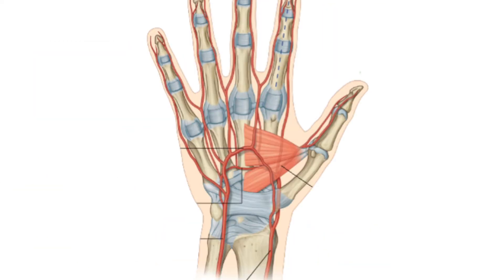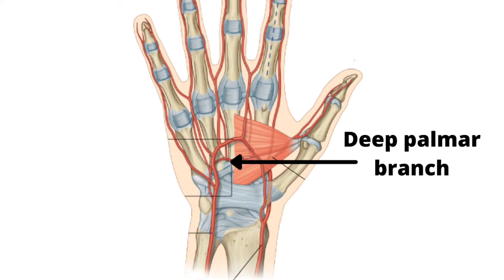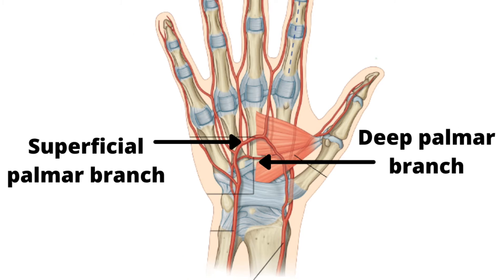In the palm, the artery divides into the deep palmar branch, which takes part in the deep palmar arch, and the main continuation of the ulnar artery is the superficial palmar branch, which takes part in the superficial palmar arch.